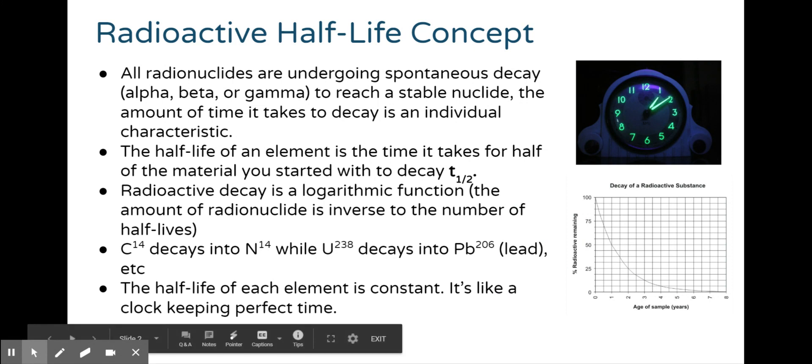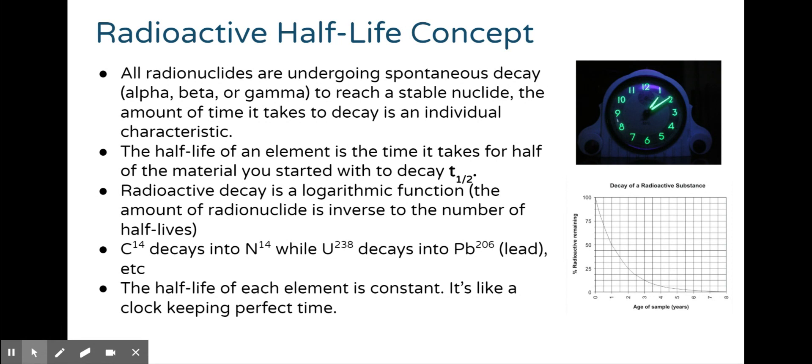All radionuclides are undergoing spontaneous decay, whether alpha, beta, or gamma, to reach a stable nuclide. The amount of time it takes to decay is an individual characteristic. The half-life of an element is the time it takes for half of the material you started with to decay. The symbol for half-life is T subscript one-half.